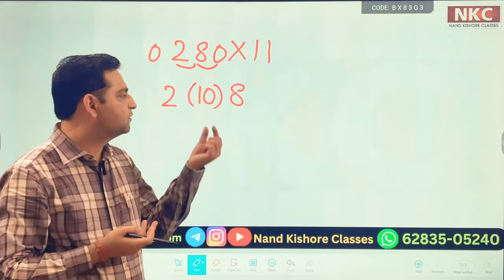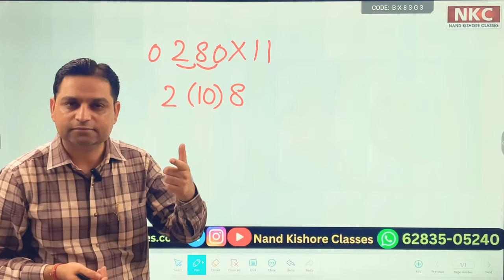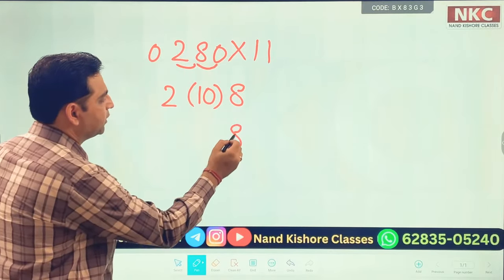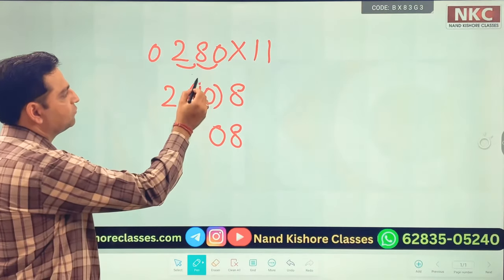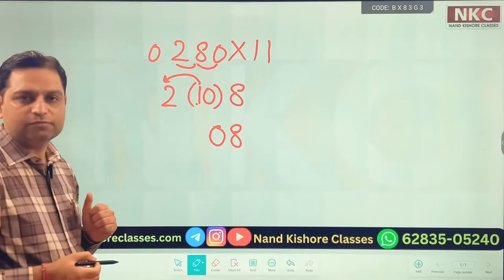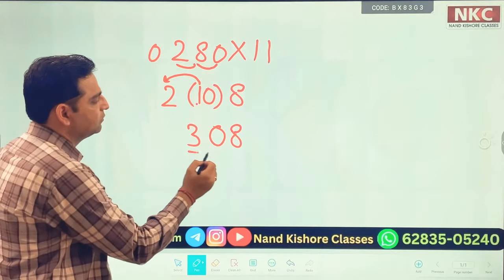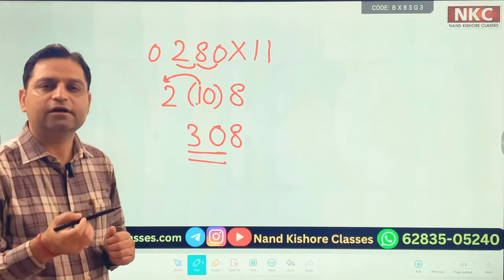And then 2 plus 0 is 2. So obviously this is not the final answer because in the middle I get a 2 digit number. So what to do with that? We will write 8 as it is. From 10 I will write 0. Then this 1 will be carried forward to the next value. 1 plus 2 is 3. So final answer is 308.